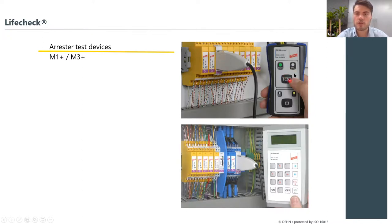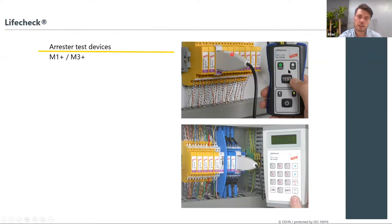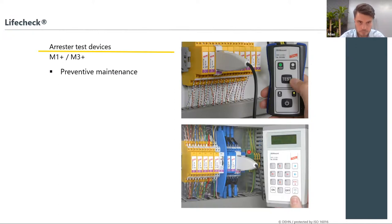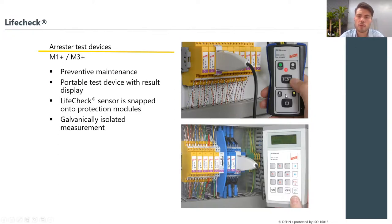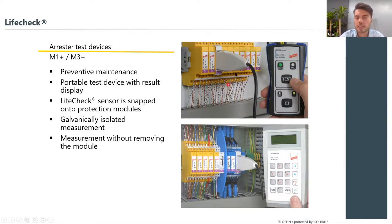The DIN RECORD check is straightforward — you have a pass/fail light. Connect the protection module as shown, press test, and depending on the RFID chip information, you can see if the SPD has failed or not. A more advanced DIN RECORD device can provide the expected remaining lifetime of the SPD and indicate if it needs to be considered for replacement soon. It's easy to test SPD functionality and provides a galvanically isolated measurement.